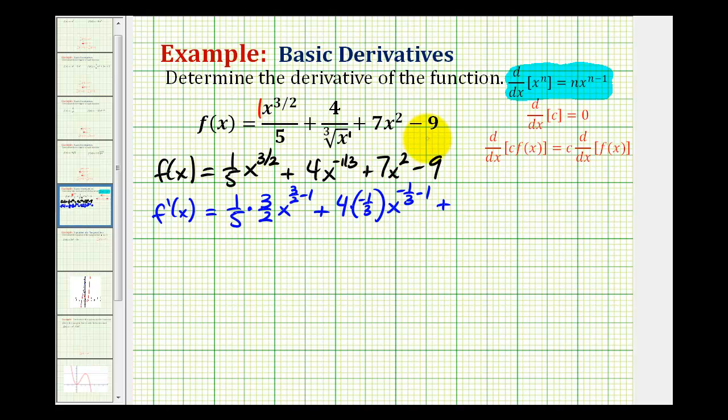Plus the next term will be seven times the derivative of x to the second, which is two times x to the first power, minus the derivative of nine. But the derivative of any constant is zero, so we'll have minus zero.